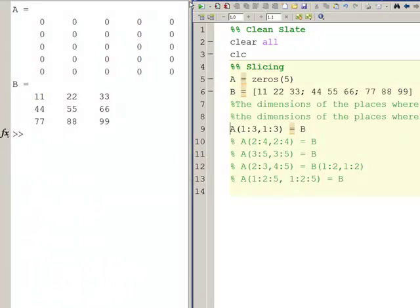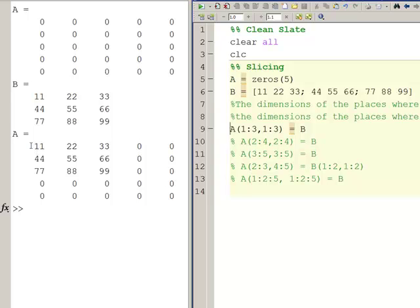Once again, these are the same size so this will work. So when I execute this, notice we've changed A because A is on the left-hand side of the equal sign. We've changed A, and what A is now is the upper left-hand corner, row three, column three, the intersection of rows three and columns three wind up being the same values as B.